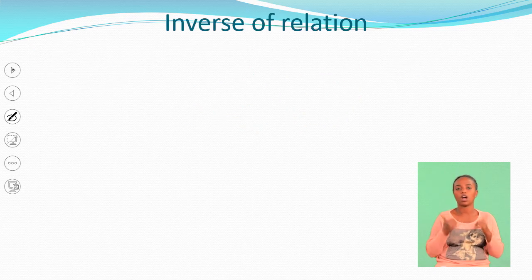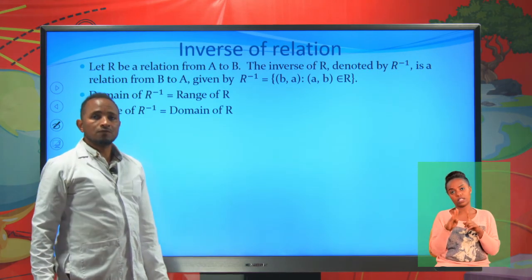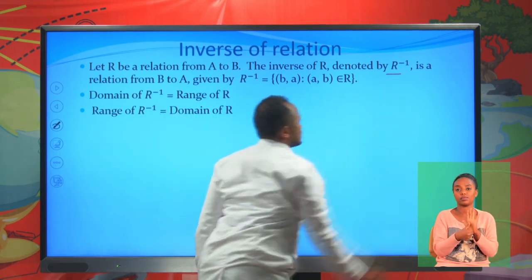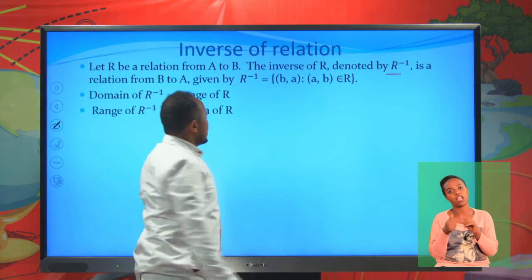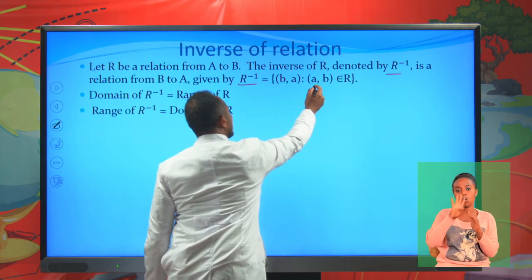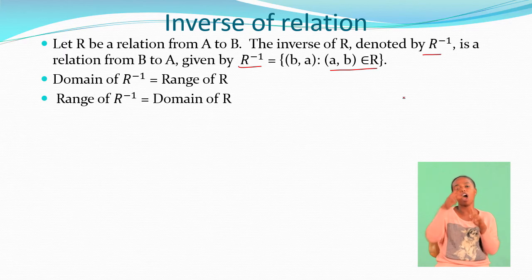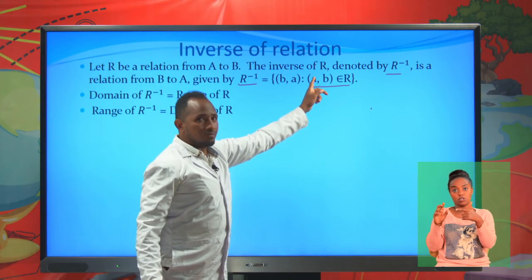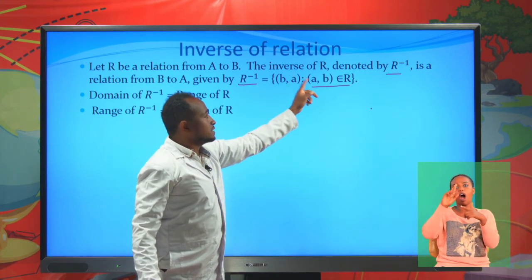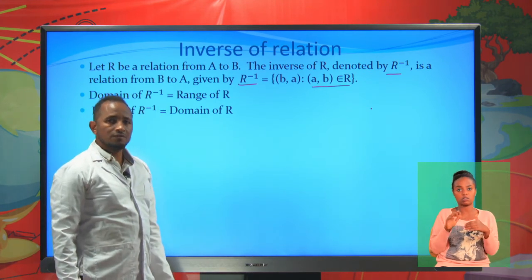Now let's continue to the inverse of a relation. Let R be a relation from A to B. The inverse of R, denoted R inverse, is a relation from B to A, given by R inverse = {(b,a) : (a,b) is an element of R}. So the domain of R inverse equals the range of R, and the range of R inverse equals the domain of R.